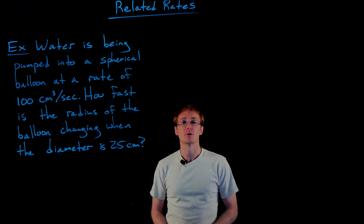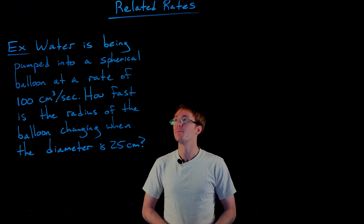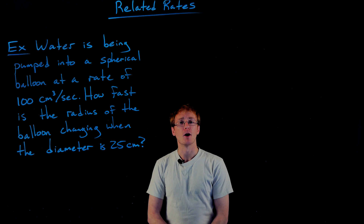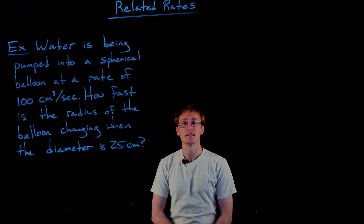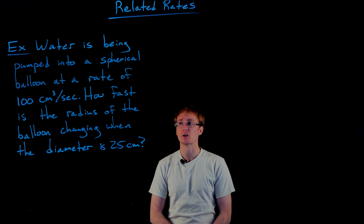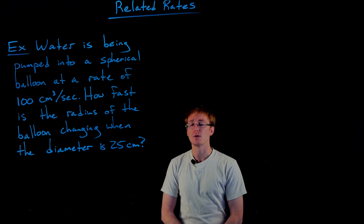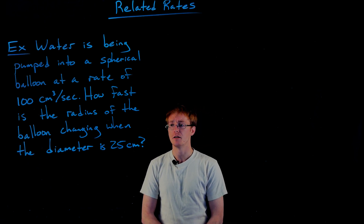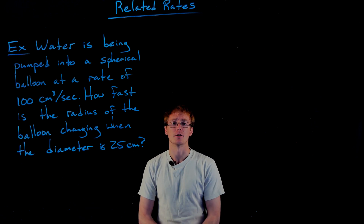Welcome back. In this video we're going to do an example of a related rate problem. We're told that water is being pumped into a spherical balloon at a rate of 100 cubic centimeters per second, and we want to use that information to figure out how fast the radius of the balloon is going to be changing when the diameter is 25 centimeters.